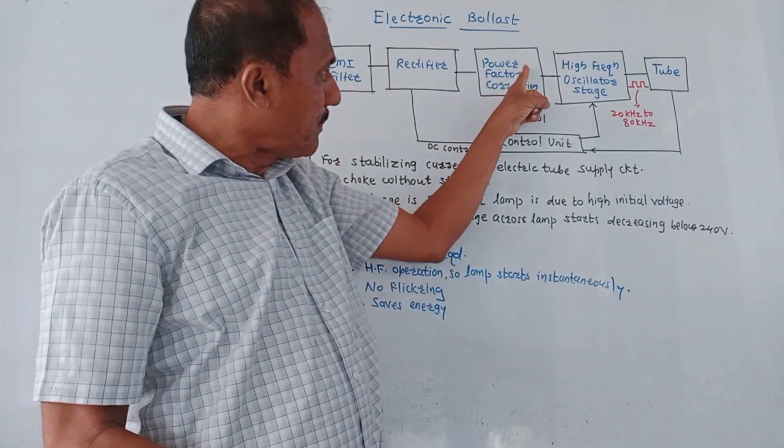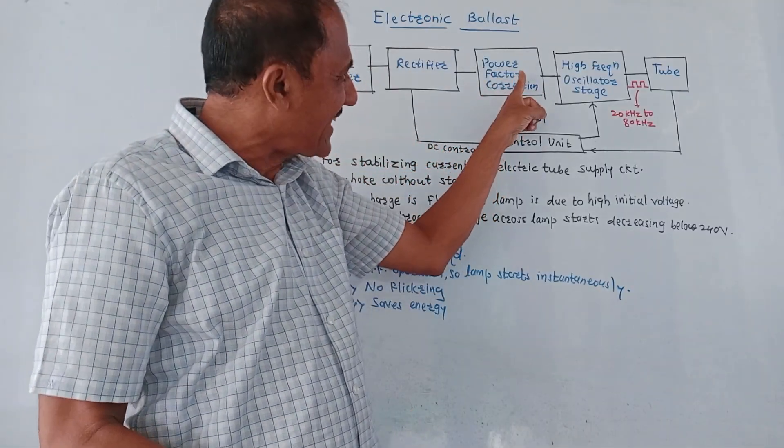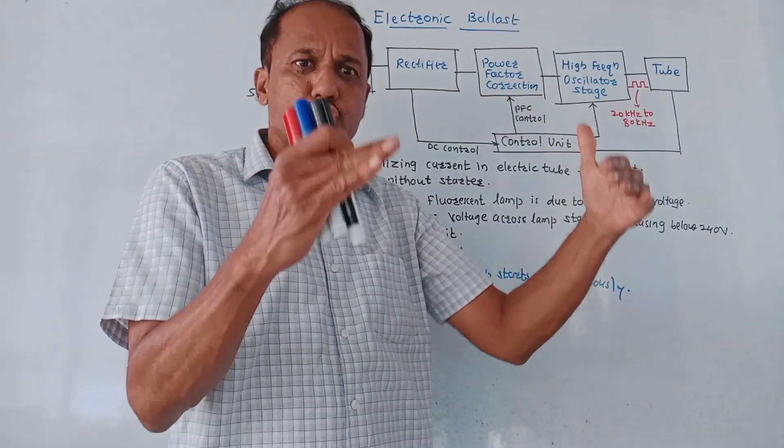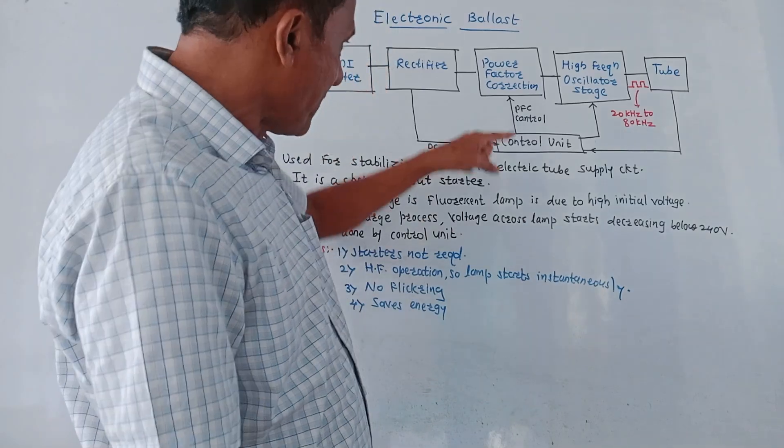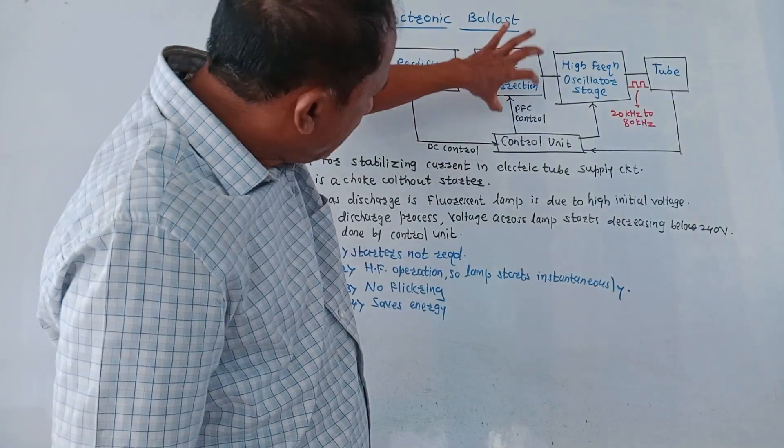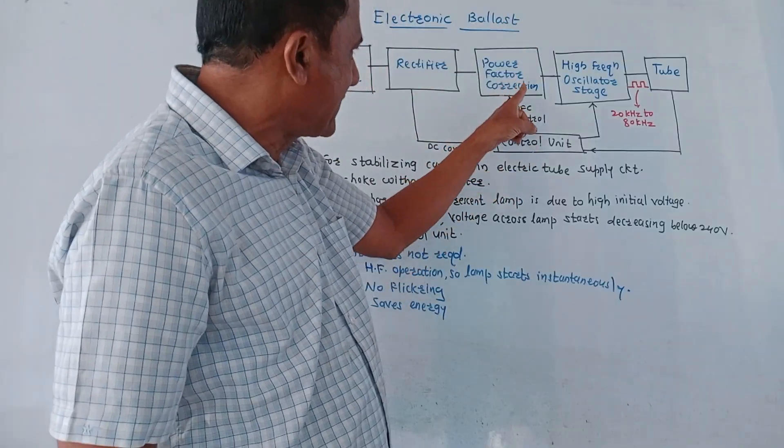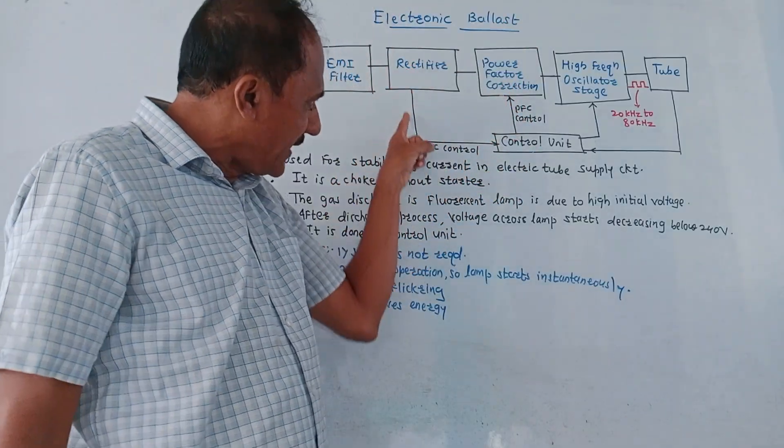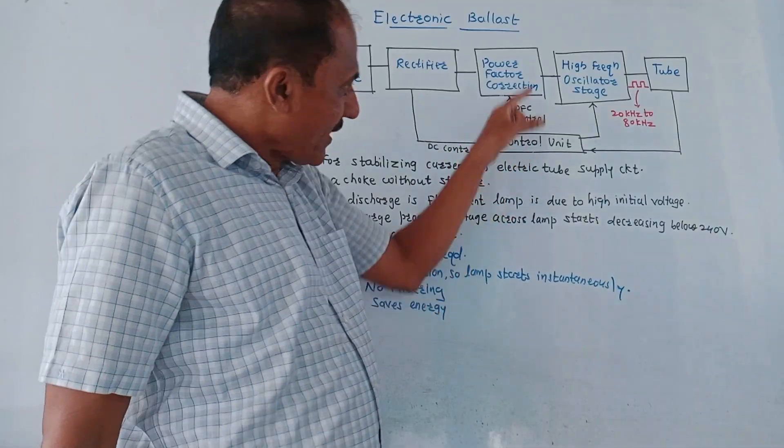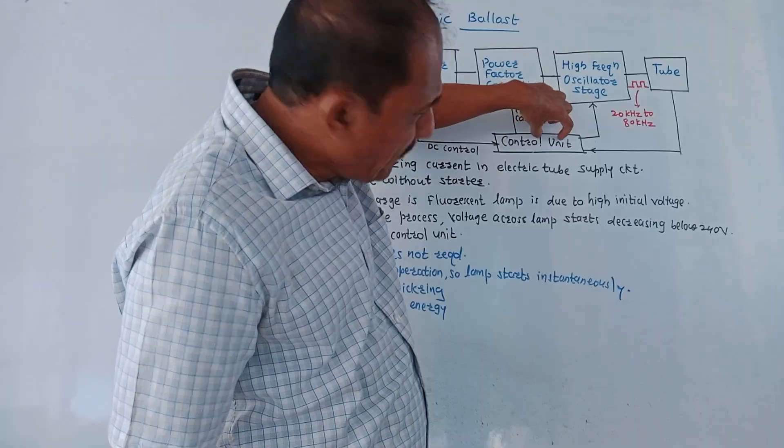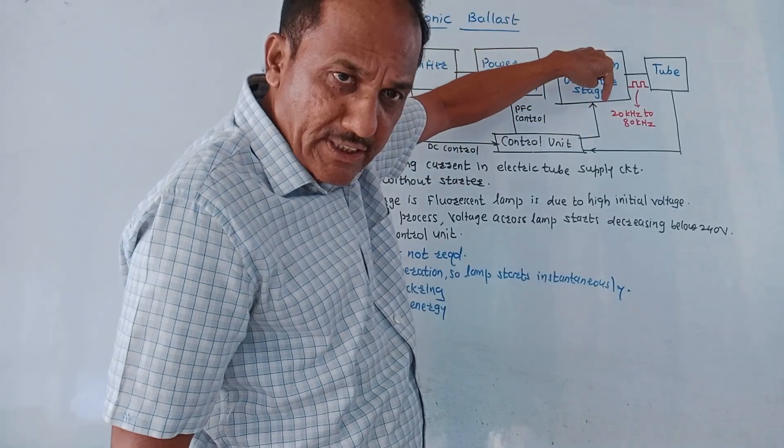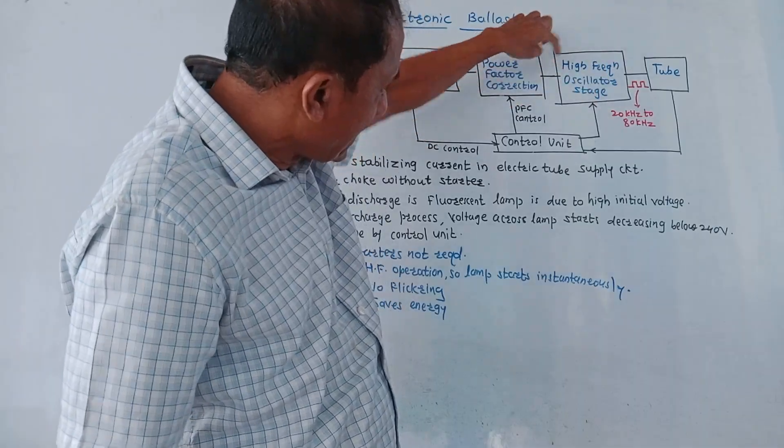Next is PFC, that is power factor correction block. As the name indicates, this block is used for the correction of power factor. This is the PFC control signal which is given from the control unit to this block. Similarly, rectifier gives signal which is a DC control signal to the control unit, and this output of control unit is also connected to high frequency oscillator stage. One more input to this high frequency oscillator stage is the output of power factor correction.